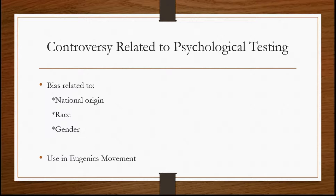Another historical controversy is that psychological testing in the early 1900s was used in what was called the eugenics movement — a movement trying to keep less desirable people from reproducing. Some of the early psychological tests were used to test intelligence of people in state psychiatric hospitals, and if their scores were below a certain level, they were forcibly sterilized — a surgery done against their will that kept them from ever having children. It was really using these tests to play God in someone's life, and you can see how that would lead to controversy in the use of psychological testing.